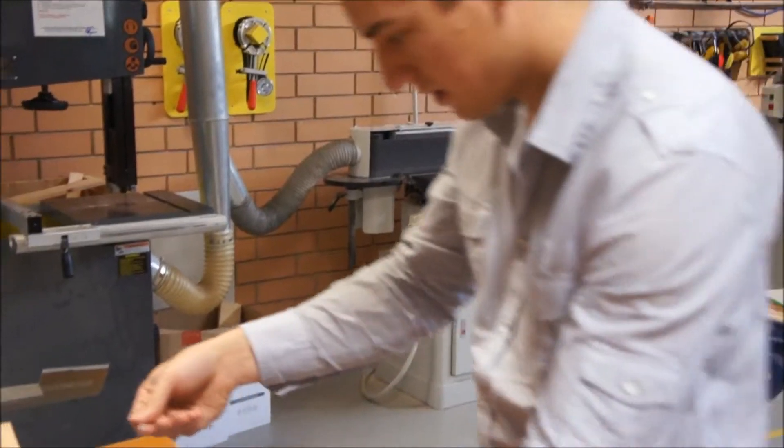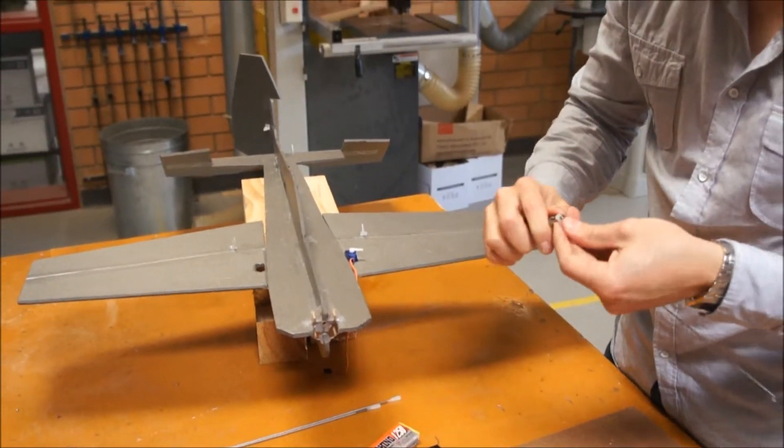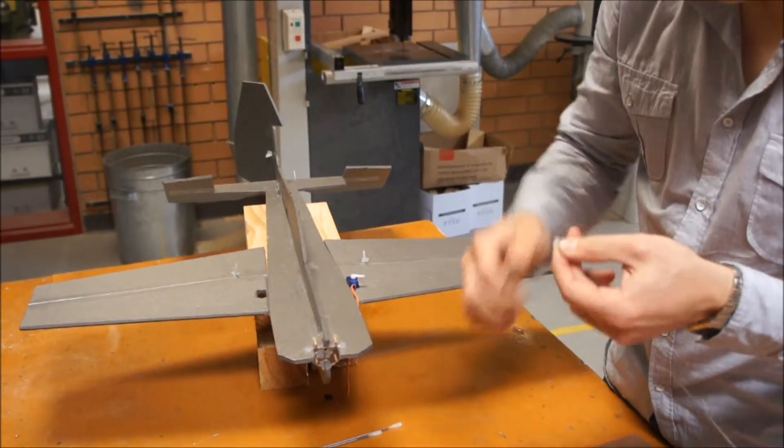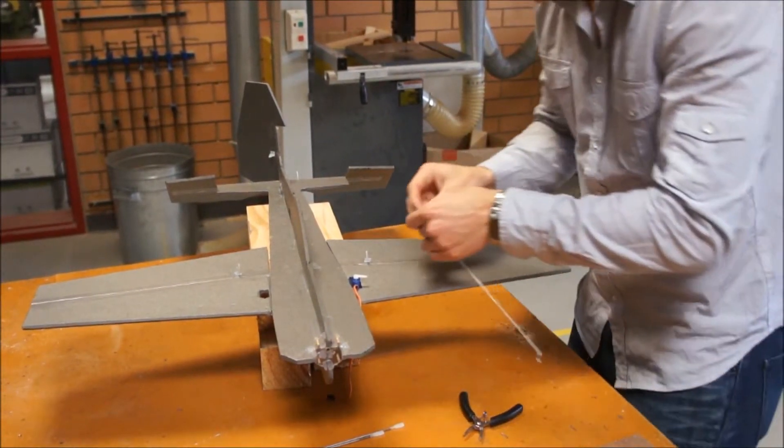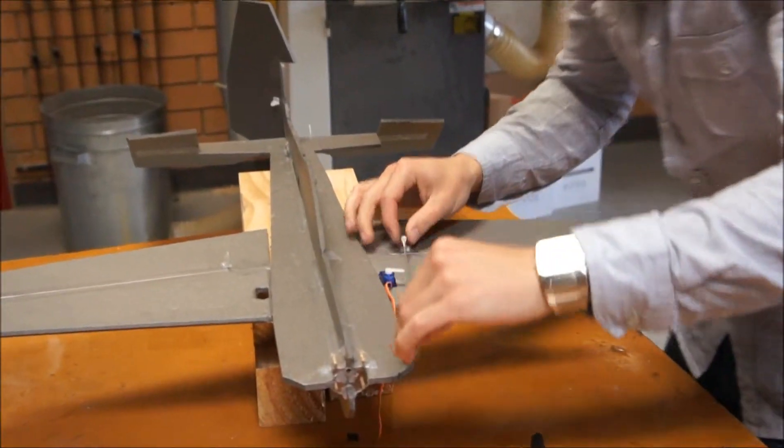And this little clevis works that you can just split the two open. It's just got a little ball joint in the end. And we're going to go up into the top hole of the little nylon rod. So that's going to give us the most leverage, the most movement, I guess, of the aileron.